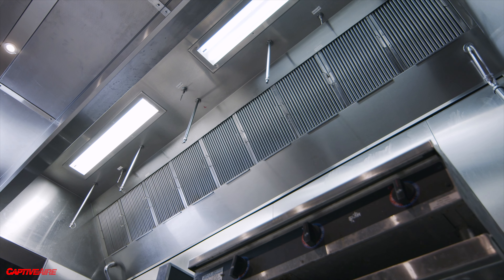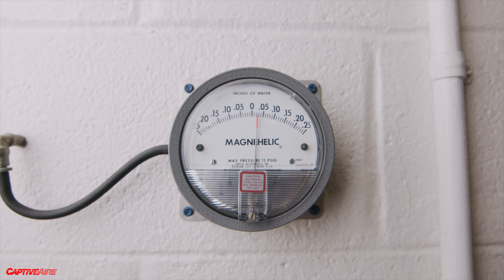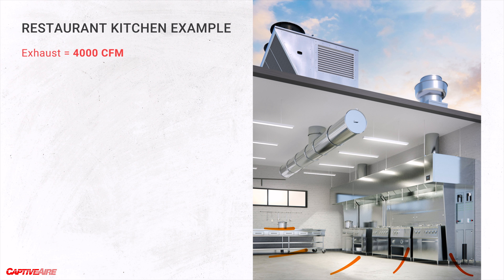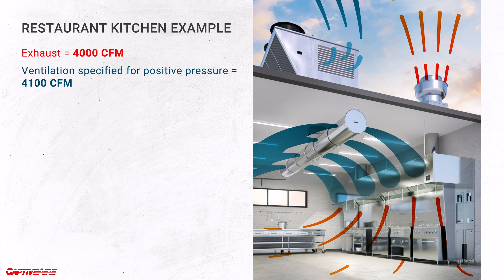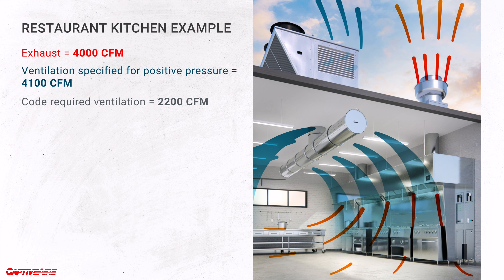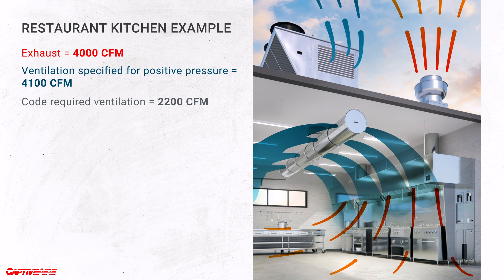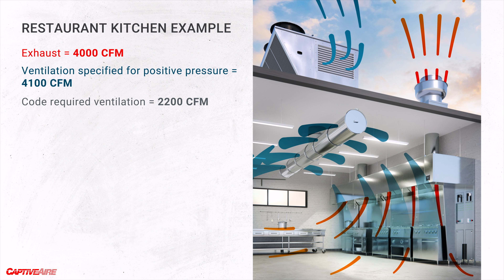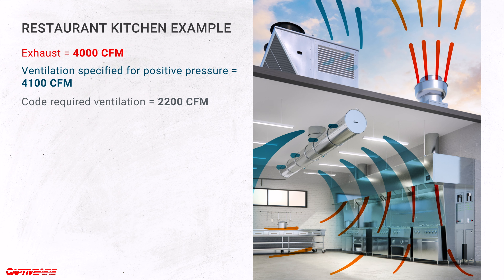At the absolute bare minimum we need to meet minimum code-required ventilation rates, but many times the actual needs of a building to maintain positive pressure will supersede that code minimum. Take a restaurant: a kitchen hood is continuously pulling a large amount of air out of the building for cooking, so you need to bring in far more outside air to make up for what the hood exhausts — more than code requires just for occupants — to maintain slight positive pressure and prevent air from infiltrating through cracks.